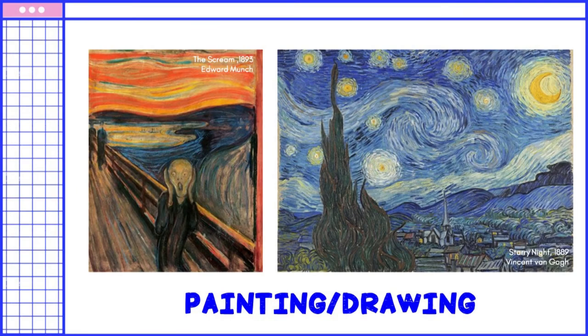Here are notable artworks from the post-impressionists. First, for painting and drawing, we have The Scream, made in 1893 by Edvard Munch. In The Scream, the protagonist's emotions are reflected throughout the surrounding scenery, which creates a symbolic plane for expression of internal being. We also have the famous Starry Night by Vincent van Gogh, painted in 1889 from the view of his window in the room where he was staying at the asylum.